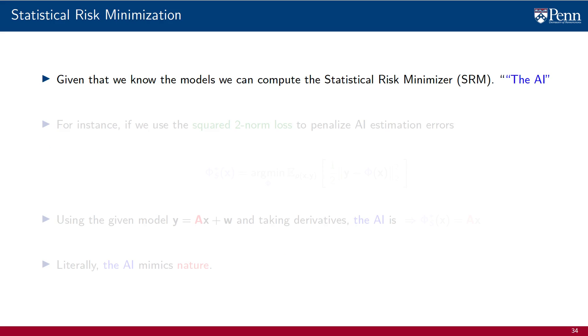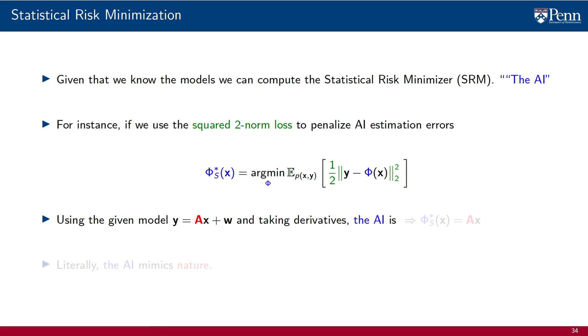Given that we know the models, we can compute the statistical risk minimizer, as in our first attempt to build an AI. For instance, if we use the squared 2-norm loss to measure the point-wise mismatch between AI estimates and actual outputs, we end up with the SRM problem in which we average the point-wise loss over the data distribution. Using the given linear model and taking derivatives, it is easy to determine the optimal AI function, which is nothing else but the very same linear transformation that appears in the model. This is a trivial example, but I am using it to illustrate the point that the AI mimics nature, literally in this case. The optimal SRM estimator is the model itself.